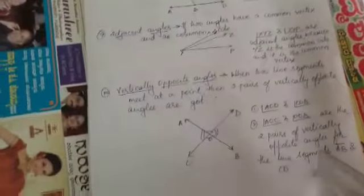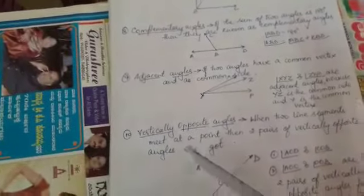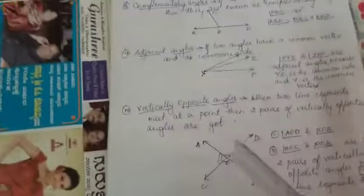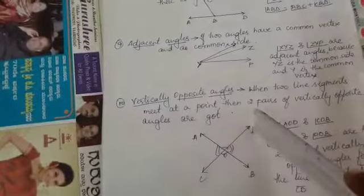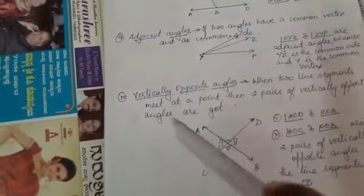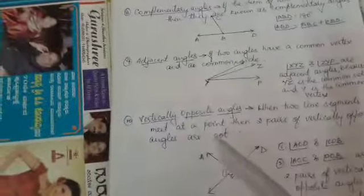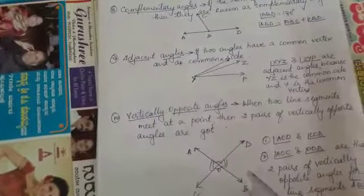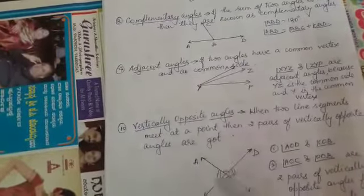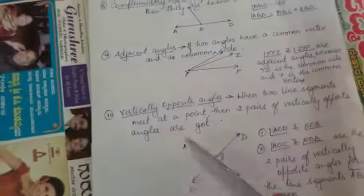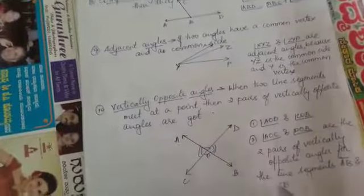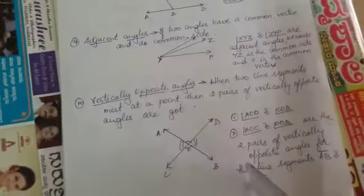The last type of angle is the vertically opposite angle. If I take two line segments AB and CD meeting at a point O, I am getting four angles: AOD, DOB, BOC, and COA. In these four angles, angle AOD and angle COB are vertically opposite. In the same way, AOC and DOB are vertically opposite. These angles are equal and are called vertically opposite angles.